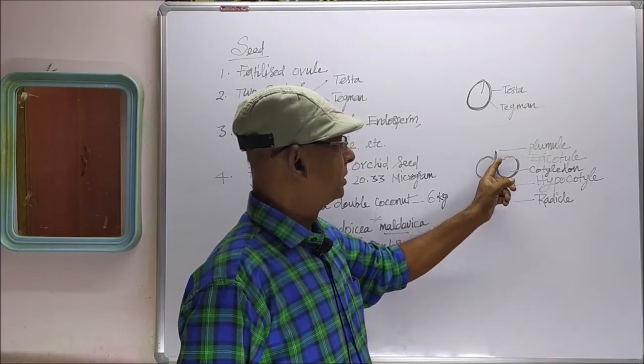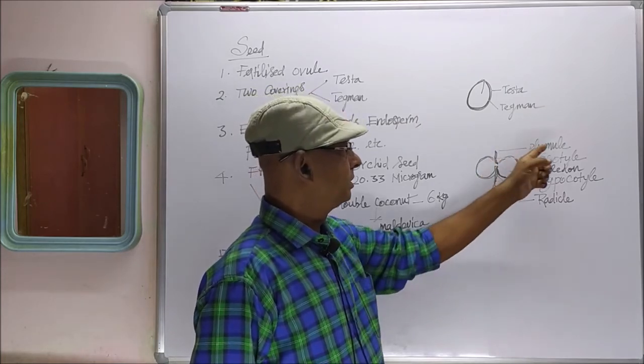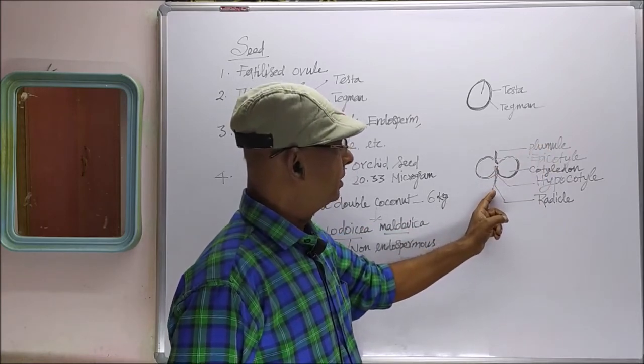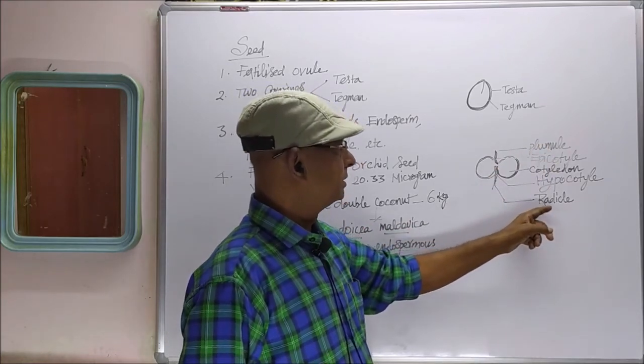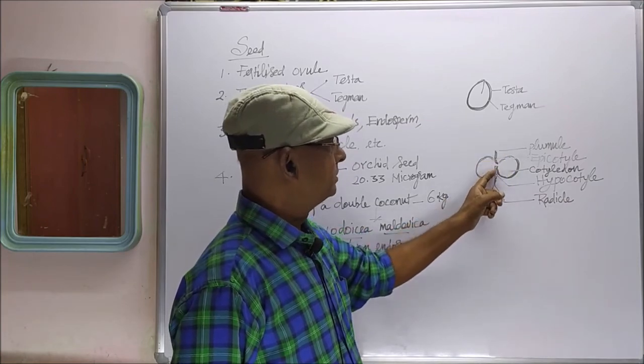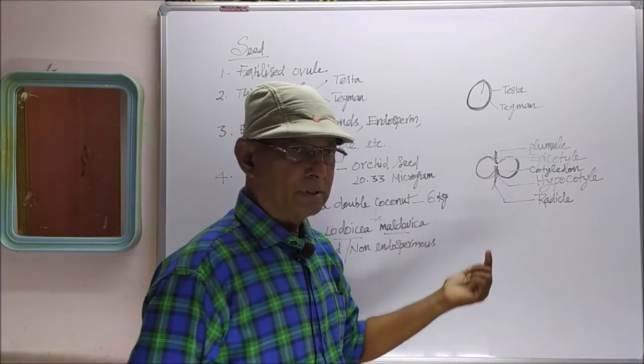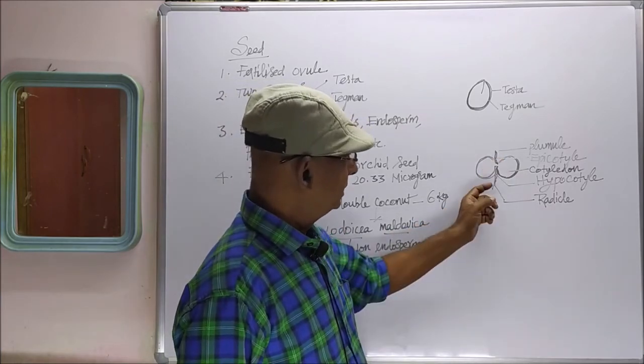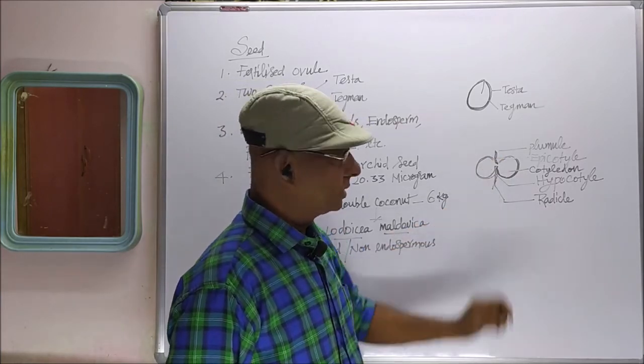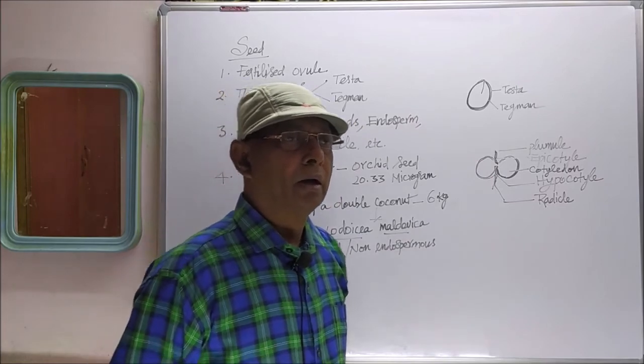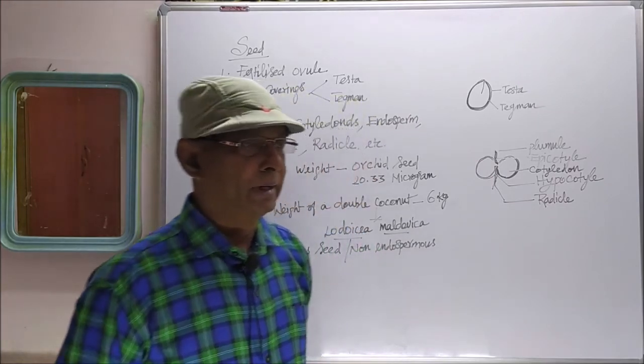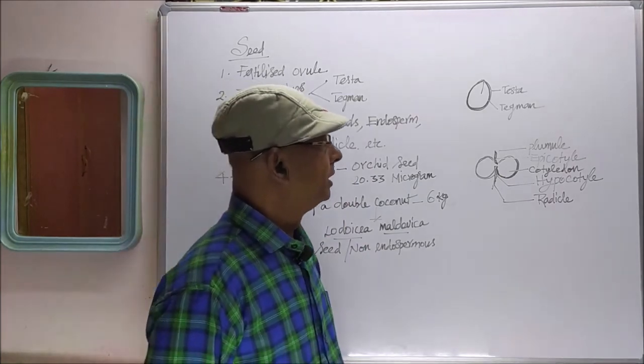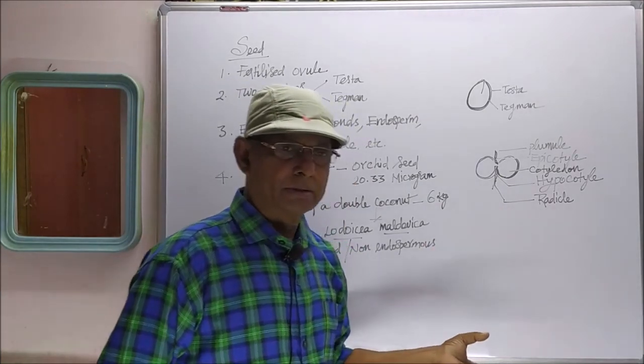The terminal part of the embryonal axis is called plumule, and the lower part is called radicle. The plumule is attached with the cotyledons by means of a short axis called epicotyl. Similarly, the radicle is attached with the cotyledons by a small embryonal axis called hypocotyl. That is the general structure of seed.